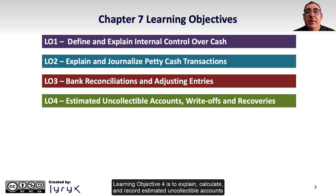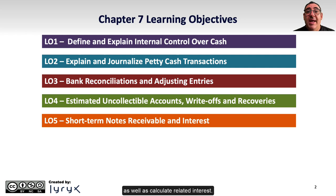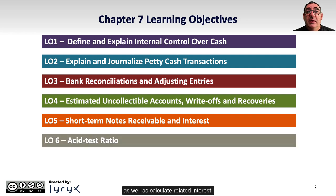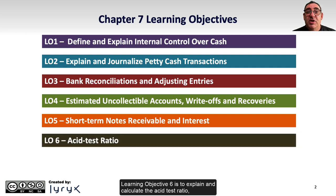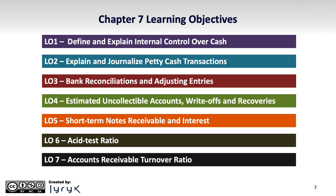Learning Objective 4 is to explain, calculate, and record estimated uncollectible accounts receivable and subsequent write-offs and recoveries. Learning Objective 5 is to explain and record short-term notes receivable as well as calculate related interest. Learning Objective 6 is to explain and calculate the acid test ratio. Learning Objective 7 is to explain and calculate the accounts receivable turnover ratio.